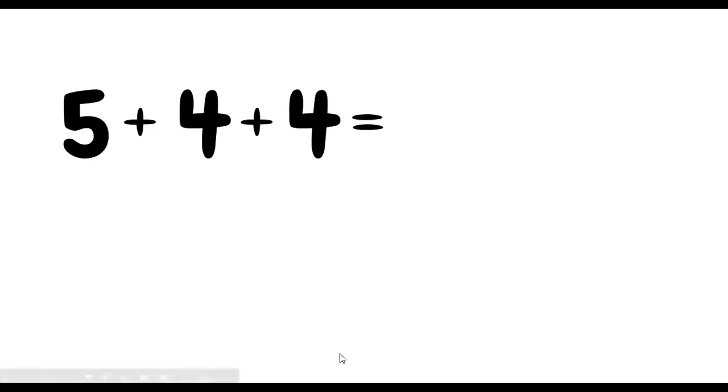Alright, so here we have 5 plus 4 plus 4. Again, I could go straight to seeing my doubles. I see a 4 here and I see a 4 here. So let's pretend that we're going to start with the double strategy. 4 plus 4 is 8, right? So 4 plus 4 is 8.